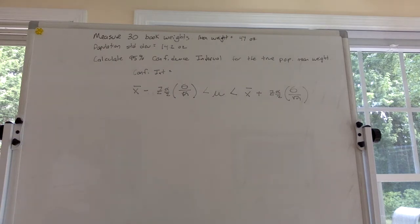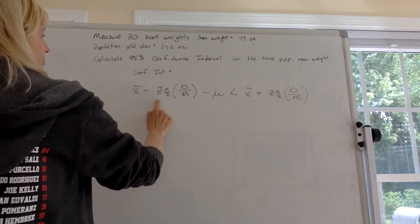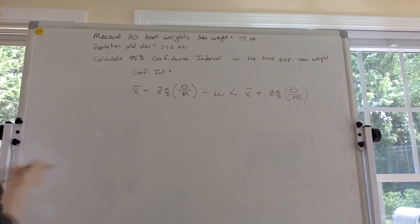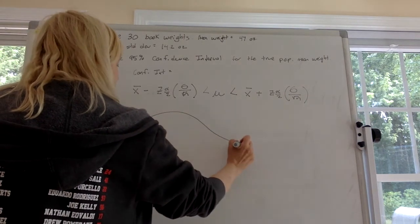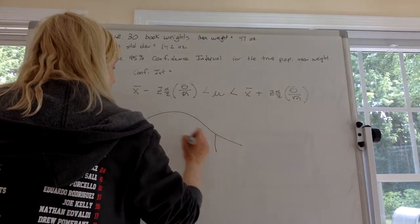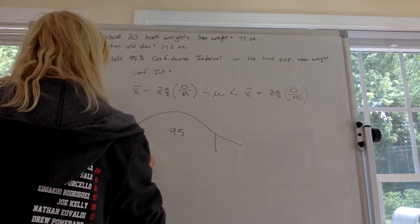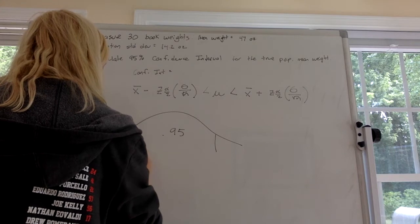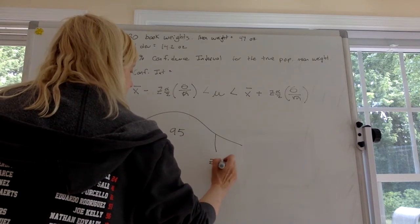The first thing we got to do is figure out z alpha over 2 for a 95% confidence level. I always have to draw a picture. So it means there's 0.95 in the middle and here's your negative z alpha over 2 and here's your positive z alpha over 2.